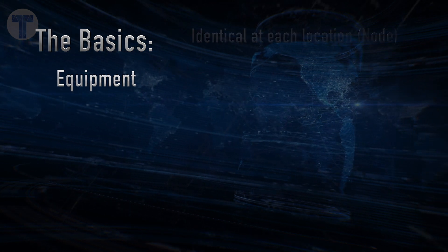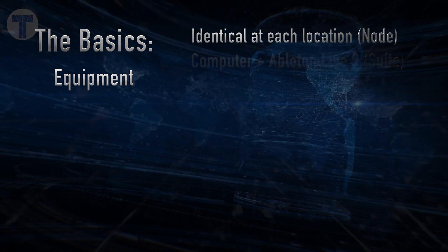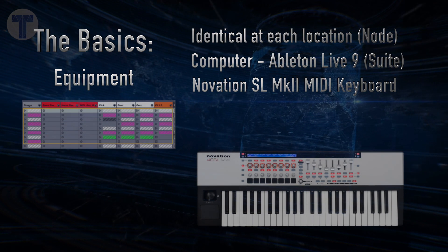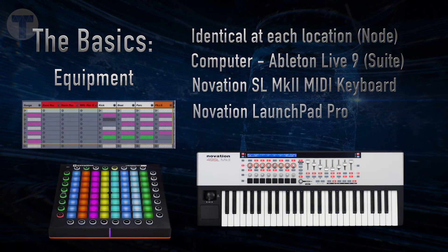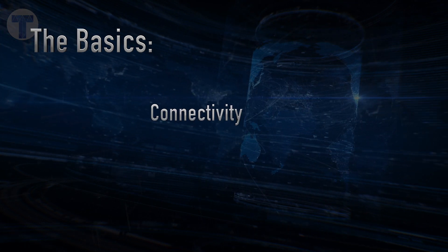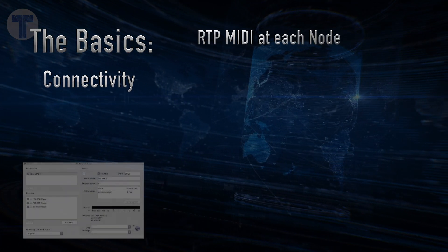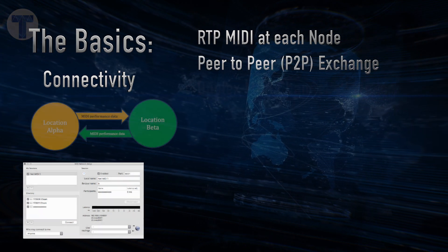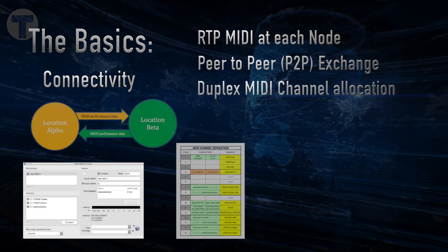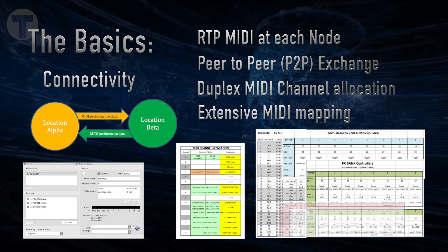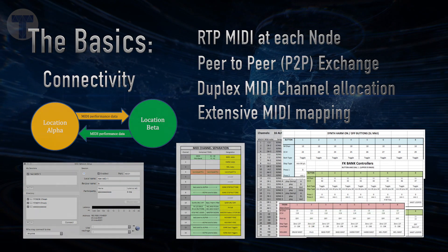The equipment used was identical at each location, using Ableton Live 9 Suite, a Novation SL Mark 2 MIDI keyboard, and a Novation Launchpad Pro. For connectivity, each node was using RTP MIDI to fire data at each other in a peer-to-peer exchange, with a duplex MIDI channel allocation and extensive MIDI mapping at either location.